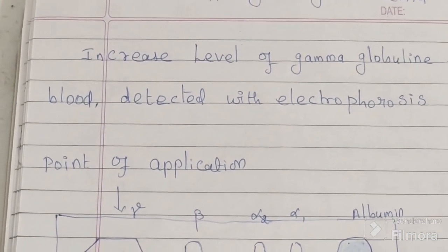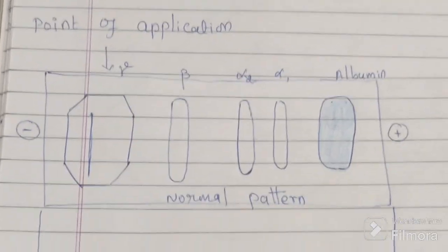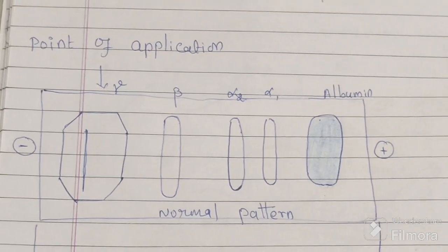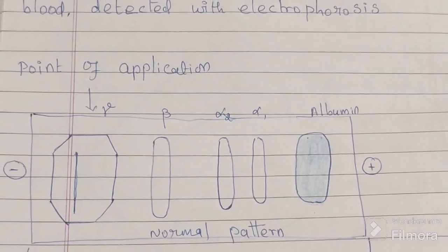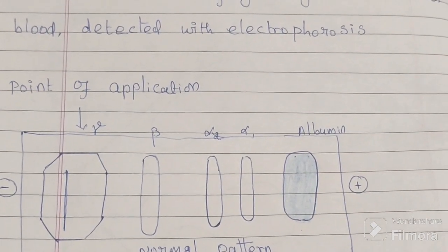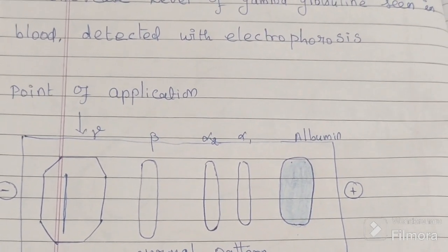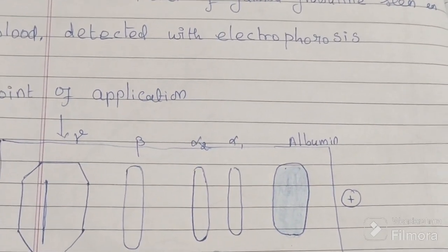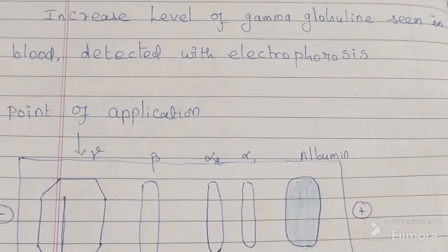First, about the electrophoretic pattern. When a serum sample is run over electrophoresis, particular albumin and globulin bands are seen. The globulin band is also divided into alpha 1, alpha 2, beta, and gamma globulin.